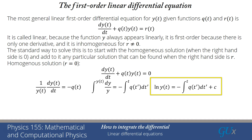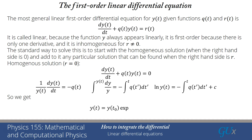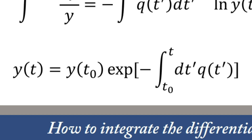We get log y(t) equals minus the antiderivative of q(t) plus some constant. We start the equation at some time t₀, which pins down the constant. So we write y(t) equals y(t₀) times the exponential of the integral from t₀ to t of minus q(t') dt'. When t equals t₀, the integral is zero, so the exponential equals one and the object equals y(t₀). That's what I supply as the initial condition. For all t after that, this satisfies the differential equation.